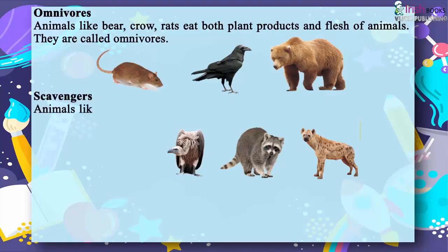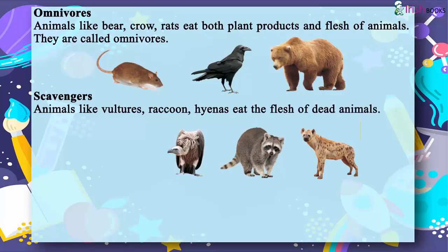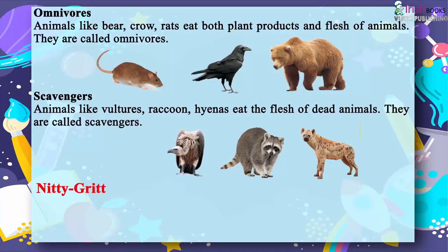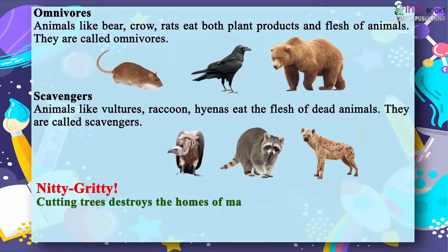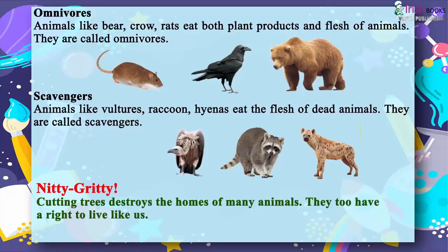Animals like vultures, raccoons, and hyenas eat the flesh of dead animals — they are called scavengers. Cutting trees destroys the homes of many animals. They have a right to live like us.